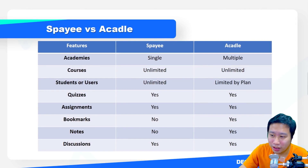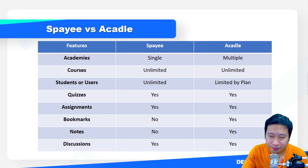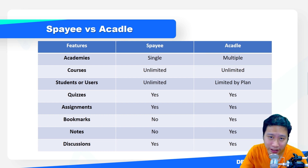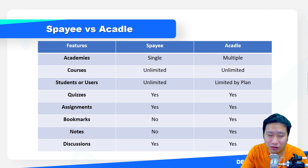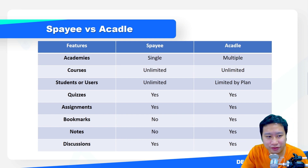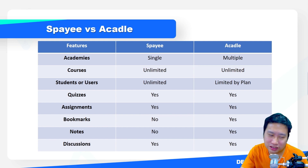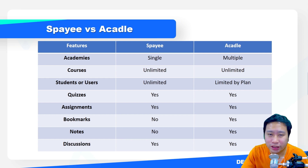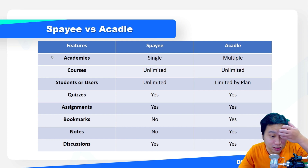With Spayee's base plan, you only get a single academy — meaning you can only have one school. So if you want to have a school for Decisive Digital Marketing and a separate Decisive Cooking School, that's not possible with Spayee. But that is actually possible with Acadle, depending on the plan that you have.